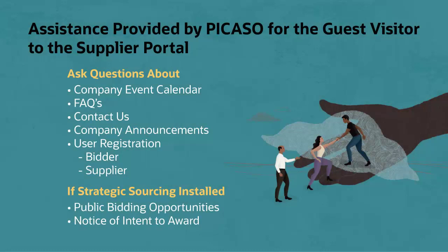The Supplier Digital Assistant can help a visitor to the public supplier portal determine if there are business opportunities, inquiries about upcoming events, how to register for those events, and more. The Hosting Organization can include additional capabilities for queries on public bidding events and public bid awards if the Strategic Sourcing module is installed, and chooses to expose bidding opportunities open to the general public. The Hosting Organization determines the capabilities offered with the Digital Assistant and can tailor PICASO to respond with their specific content.